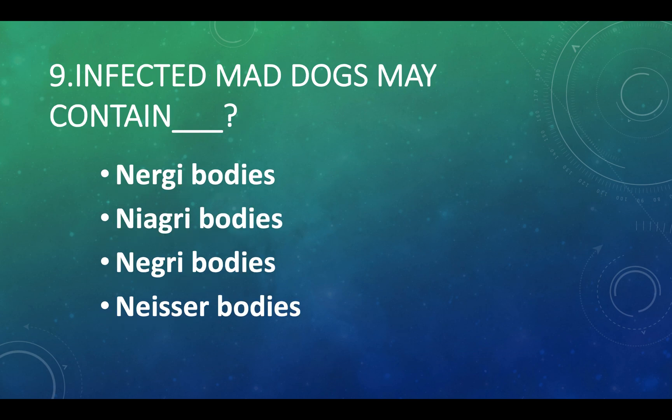Infective mad dogs may contain: Option A — Negri bodies, Option B — Negri bodies, Option C — Negri bodies, Option D — Negri bodies. Answer: Option C, Negri bodies.